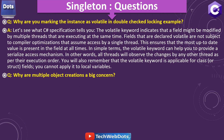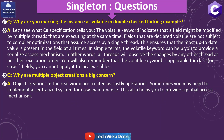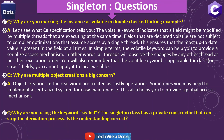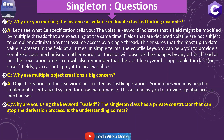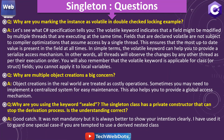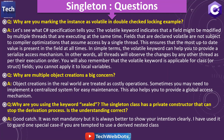Why is multiple object creation a big concern? In the real world, object creation is treated as a costly operation. Sometimes you need to implement a centralized system for easy maintenance, and Singleton helps provide a global access mechanism. Regarding the sealed keyword: the Singleton class already has a private constructor that stops derivation, so sealed is not strictly mandatory — but it is always better to show your intention clearly. I used it to guard against a special case where someone might be tempted to use a derived nested class.